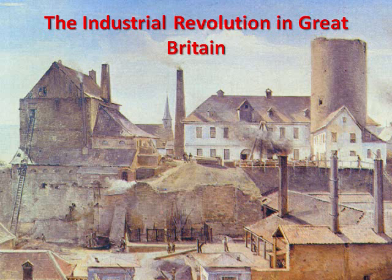Advances in technology made cottage industry inefficient. The invention of the flying shuttle made weaving faster, meaning weavers now needed more thread from spinners. By 1768, James Hargreaves had invented a spinning machine called the spinning jenny, which made the spinning process faster. Thread was now being produced faster than weavers could use it.